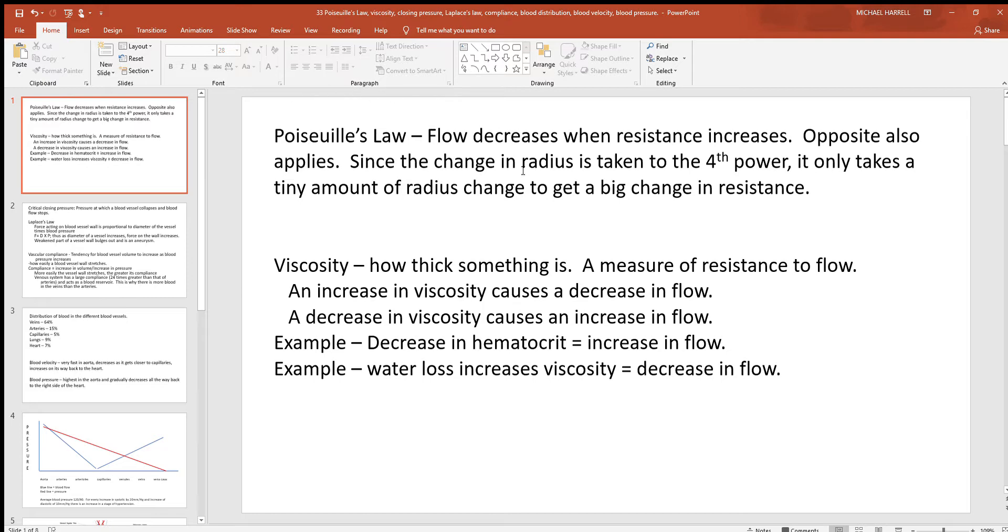When you look at what changes resistance more than anything else, the radius - the size of the blood vessel. They can change their size because of all that smooth muscle found in their wall. Sympathetic nervous system has control over that. Remember radius is so big when it comes to resistance and flow because any change in radius will be taken to the fourth power. So anytime you decrease that radius, making the pipe smaller, it gives way more resistance and a lot less flow. Just the opposite applies too. You make the radius larger, now you got a bigger pipe with less resistance and more flow.